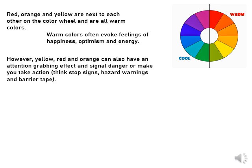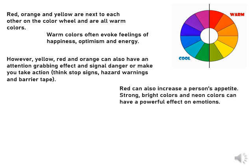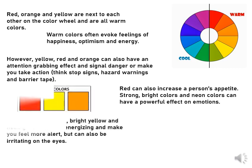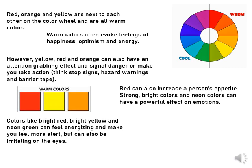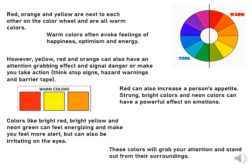However, yellow, red and orange can also have an attention-grabbing effect and signal danger or make you take action — think stop signs, hazard warnings and barrier tape. Red can also increase a person's appetite. Strong, bright colors and neon colors can have a powerful effect on emotions. Colors like bright red, bright yellow and neon green can feel energizing and make you feel more alert, but can also be irritating on the eyes. These colors will grab your attention and stand out from their surroundings.